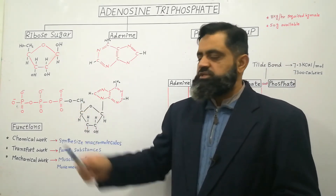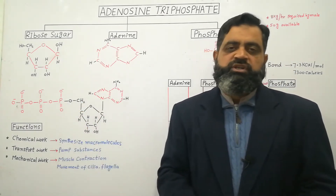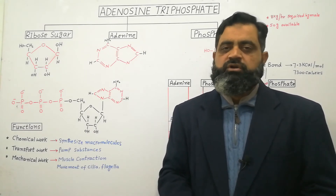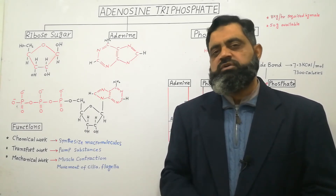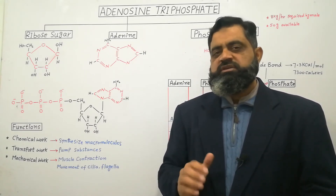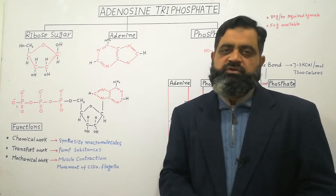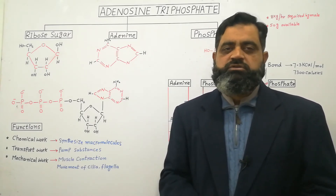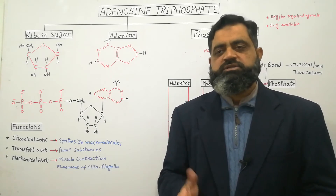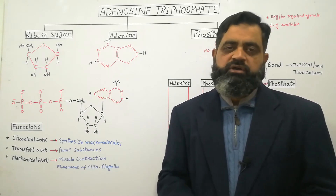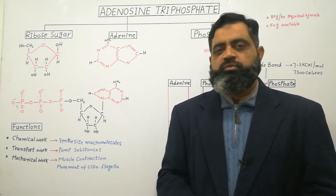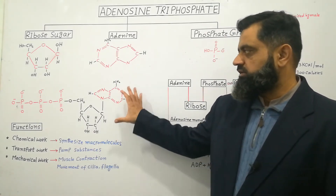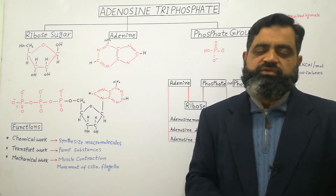To attach each phosphate group we need energy, which is 7.3 kilocalories per mole to synthesize one mole of ATP. This energy comes from the metabolism of carbohydrates taking place in the mitochondria during aerobic respiration. So in this way we have just synthesized a molecule of ATP.